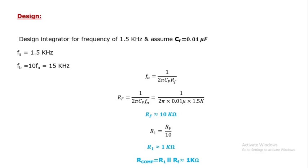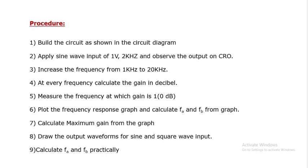From the formula of fa — fa equals 1 over 2π·RF·CF — we have the value of CF, so from this we can calculate RF, which is nearly equal to 10 kilo-ohm. From the ratio of fa to fb we get RF/R1 equals 10, so R1 is calculated as RF divided by 10, giving R1 equal to 1 kilo-ohm. The compensation resistor, used to compensate for input offset currents, is calculated as R1 parallel RF, which equals 1 kilo-ohm.